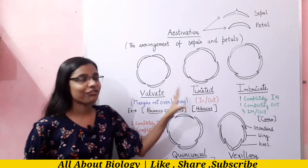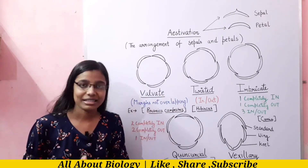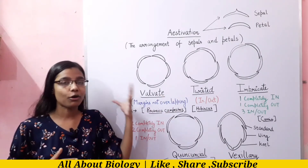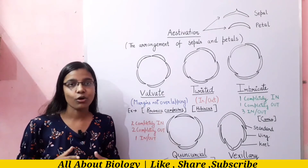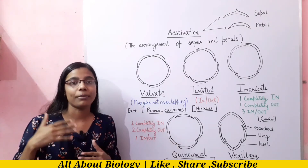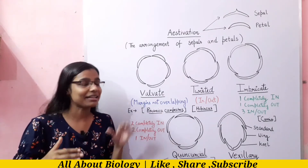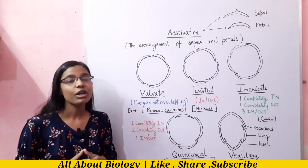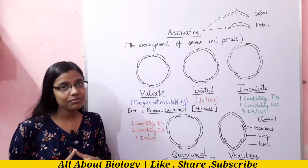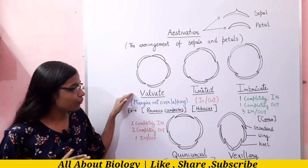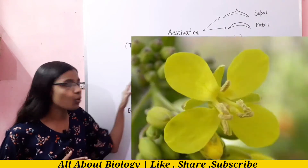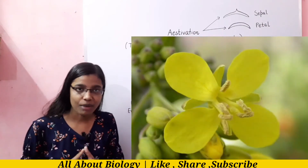So all these are the different types of aestivation. You have to know about aestivation types because when you study taxonomic families, these terms will come up. In valvate aestivation, there is no overlapping of margins.